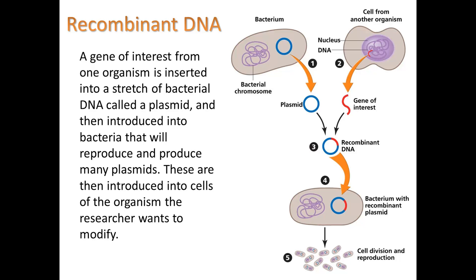Here's a diagram of what's going on. This shows how we make recombinant DNA. You have a cell from some organism that has a trait you like, and you take that DNA and cut out the gene of interest. You put that gene into plasmid DNA from a bacterium, giving you a new piece of recombinant DNA. You then inject that into the bacterium and get it to reproduce, making more and more copies. Then you take these cells and inject them into whatever organism you'd like to modify.